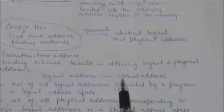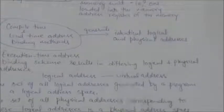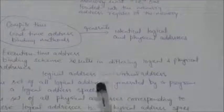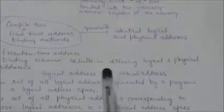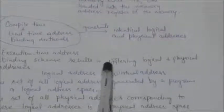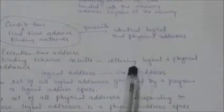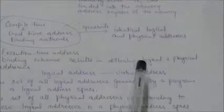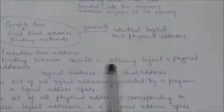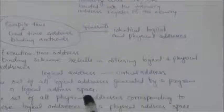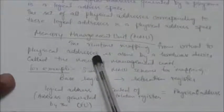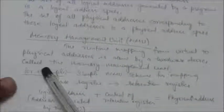This virtual address cannot be used to access the memory directly. The virtual address must be mapped into a physical address, because physical addresses are used to access the memory. So this virtual address must be translated into a physical address.